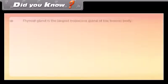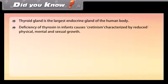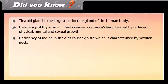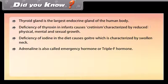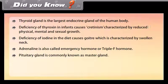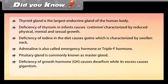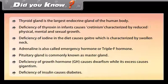Did you know? The thyroid gland is the largest endocrine gland of the human body. Deficiency of thyroxin in infants causes cretinism, characterized by reduced physical, mental, and sexual growth. Deficiency of iodine in the diet causes goiter, which is characterized by a swollen neck. Adrenaline is also called the emergency hormone or fight-or-flight hormone. The pituitary gland is commonly known as the master gland. Deficiency of growth hormone (GH) causes dwarfism, while its excess causes gigantism. Deficiency of insulin causes diabetes.